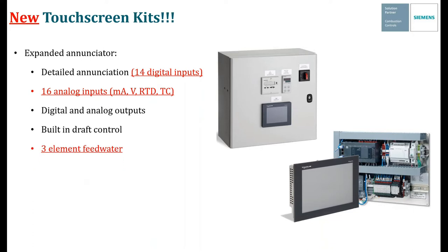You can also do three-element feedwater control, built into the touchscreen program. You use a steam flow meter, a water flow meter, and a differential pressure transducer. Data logging, trending, and totalization also come with these local touchscreen kits. You can pull data into the touchscreen, log it to a USB drive, and trend it on a graph showing different inputs over time. Any Modbus address available from the LMV, or from analog and digital inputs and outputs on the PLC, can be data logged and trended. You can also totalize analog input signals for a fuel flow meter or steam flow meter, and using all this information, you can do a real-time fuel-to-steam efficiency calculation shown right on the screen.